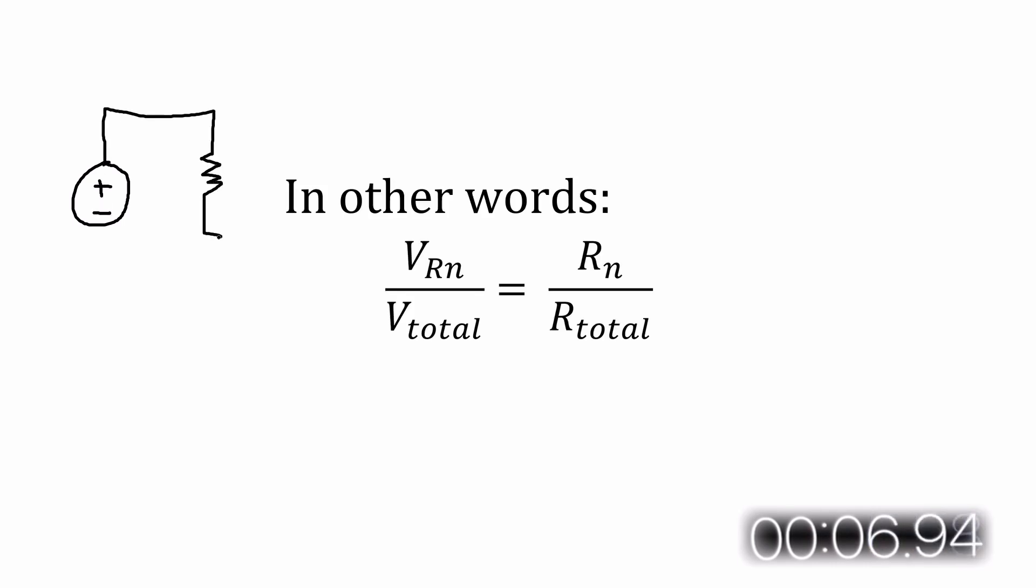The voltage divider circuit uses two or more resistors in series to divide the given voltage between them, and as we'll see, the fraction of the voltage across each individual resistor compared to the total voltage is the same as that resistor's fraction of the total resistance.